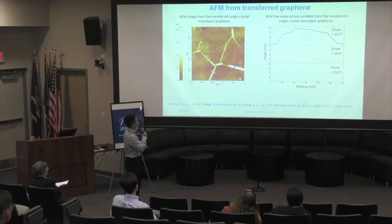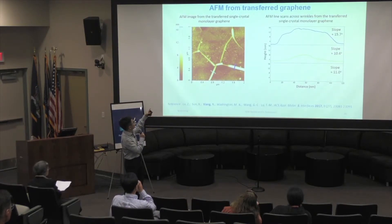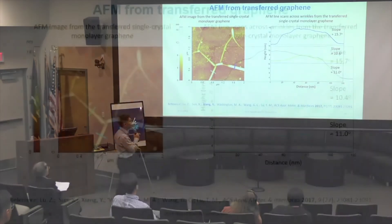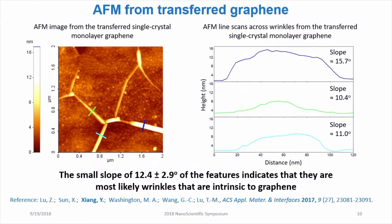Next, I want to show what more we can gain from AFM or RHEED study of the graphene surface. We found some interesting features on the graphene surface from an AFM image of the transferred single crystalline graphene. We did line scans across each of those features, shown in the right-hand figure, and found that the slope of each feature is only about 10 degrees.